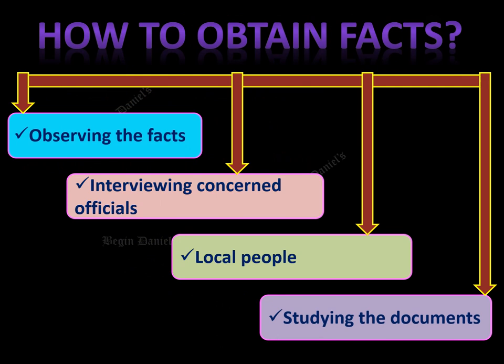How can we obtain facts? There are various methods. First, we ourselves observe the facts with our own eyes. Next, by interviewing concerned officials working in local government offices like the Talati office or village administrative office. Third, we can get facts from local people residing in that area. And finally, by studying documents available in the library, on the internet, or from other sources.